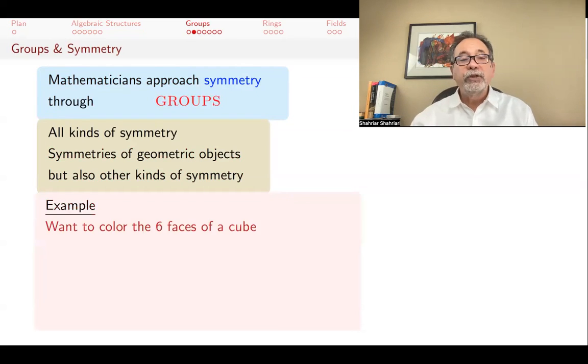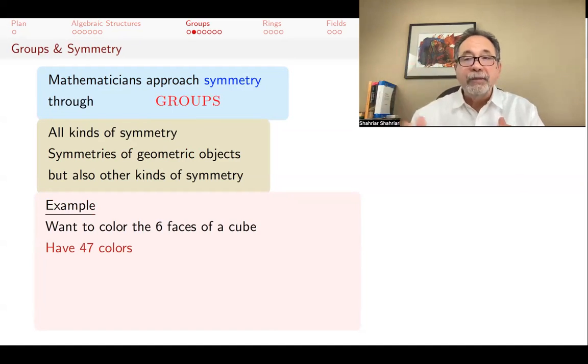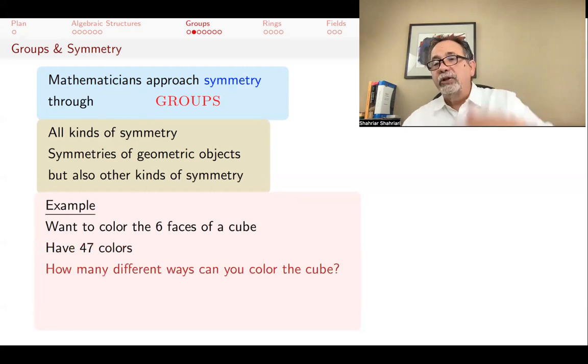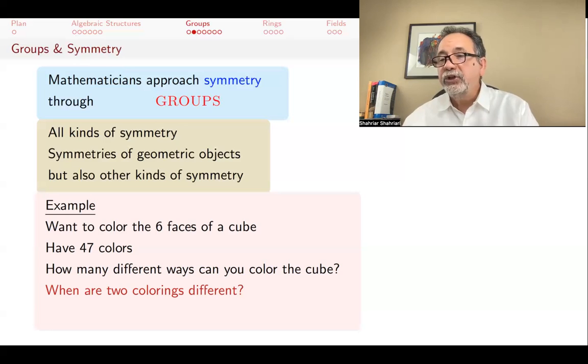For example, maybe you have a cube and 47 colors, and you want to assign a color to each face of the cube. You want to color this face maybe red, maybe that face yellow, and so forth. Because it was red for all the faces, or maybe yellow for two adjacent ones, green for two opposing faces, and purple for the rest. You may want to know in how many ways, how many different ways can you color the cube.